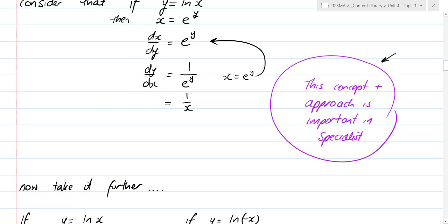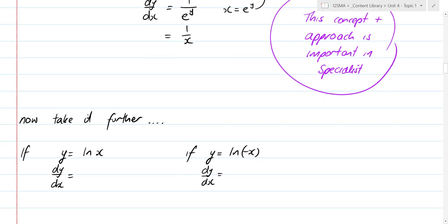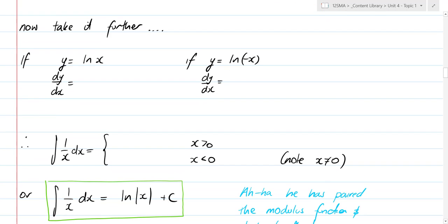Now, we're going to take it a bit further. Let's take it further. If y equals log x, dy/dx equals 1 over x. What if y equals log of negative x? What does dy/dx equal? 1 over negative x times by the derivative of negative x, which means it's equal to just 1 over x. Do you agree with that?